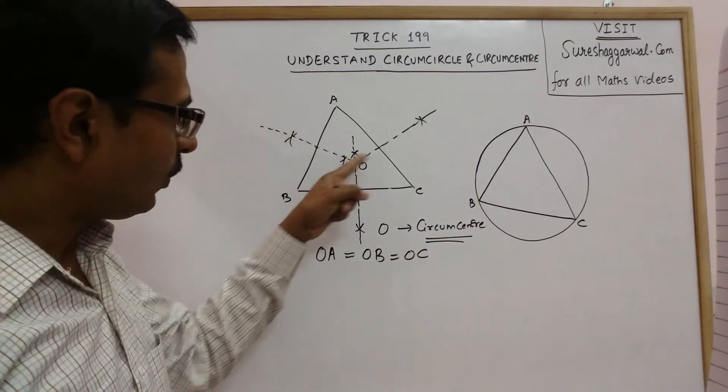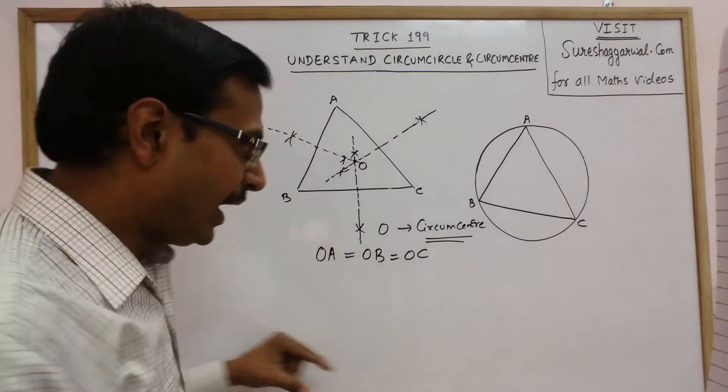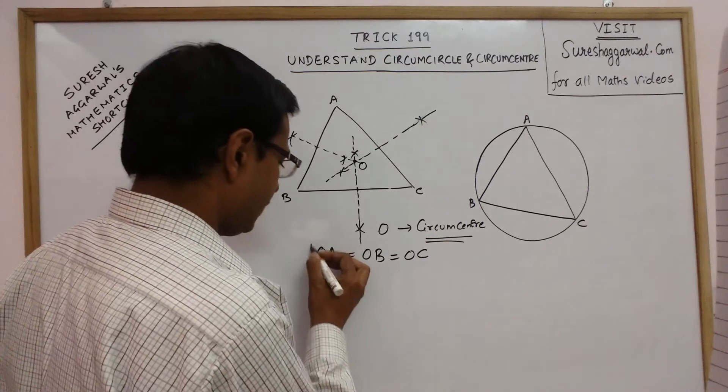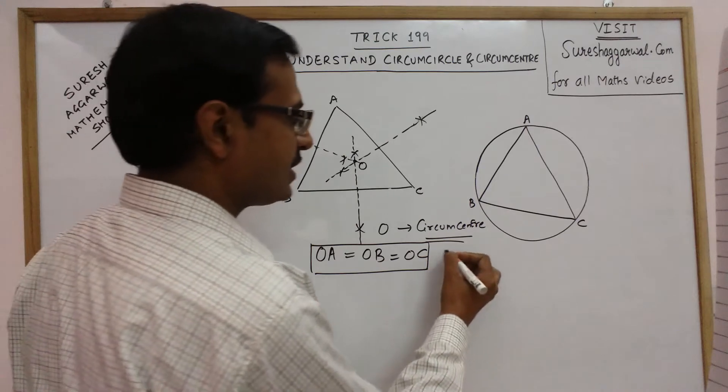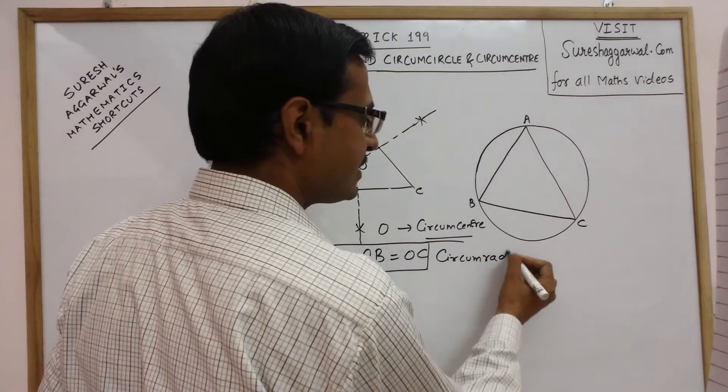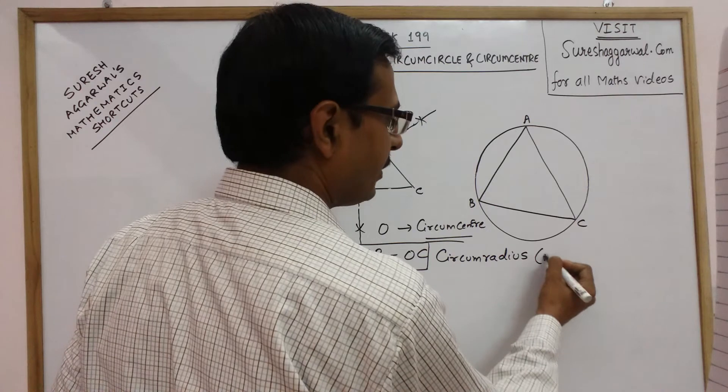OA, OB and OC, these three lengths are equal. And this length is called circumradius, which is denoted by capital R.